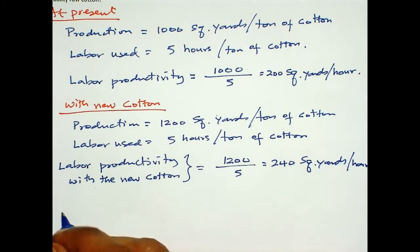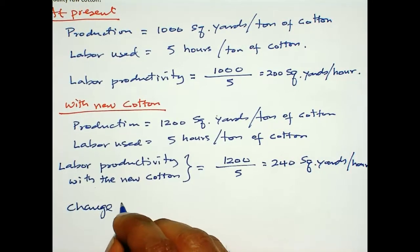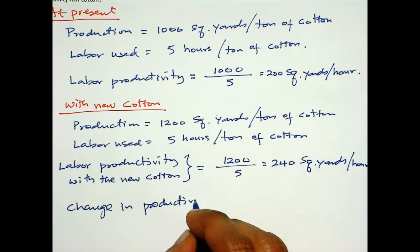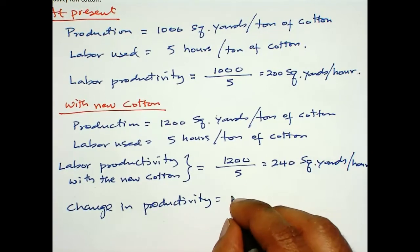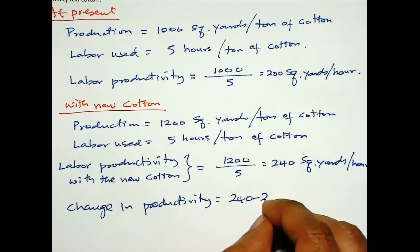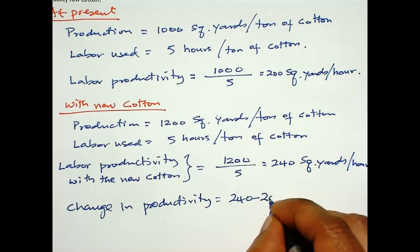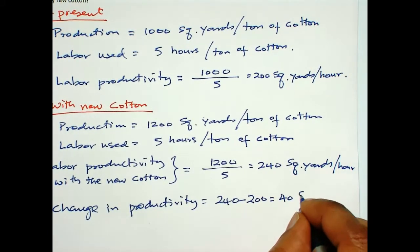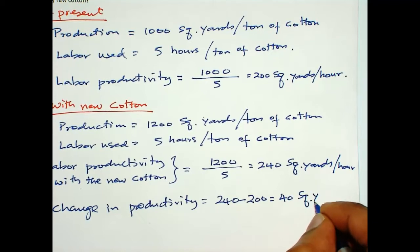So, what is the change in productivity? 240 minus 200 is 40 square yards per hour.